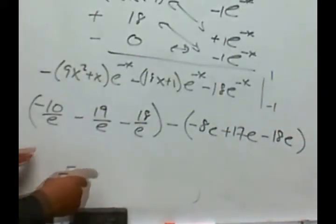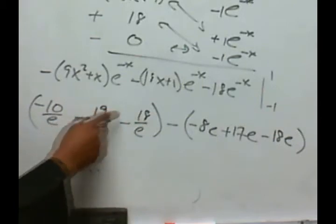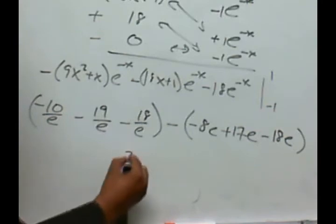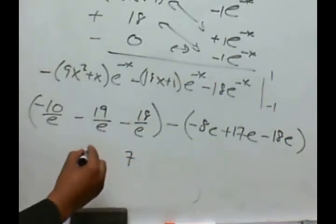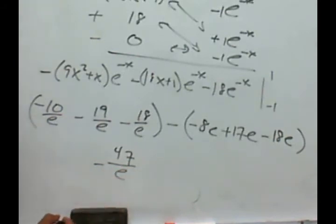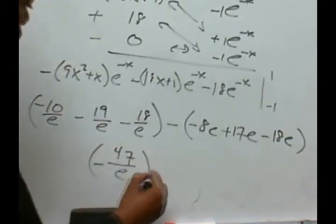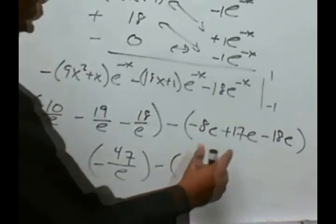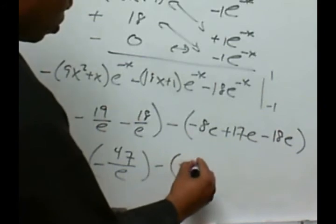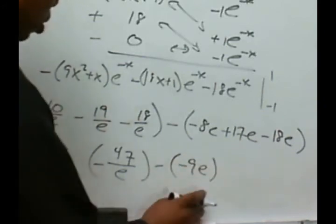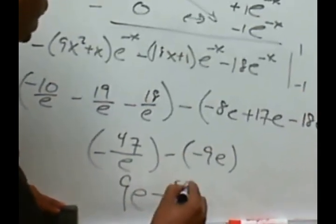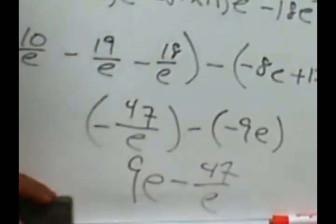Let's go through and combine all these. We've got a negative 10, a negative 19, a negative 18 — add those together and we get negative 47 over e. And over here, these two give me negative e and negative 9e, so finally these become positive, and I'll have 9e minus 47 all over e.